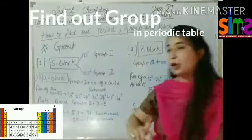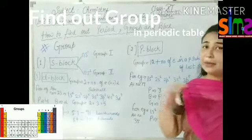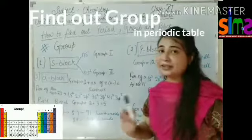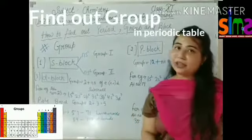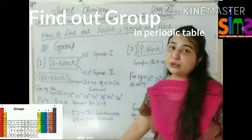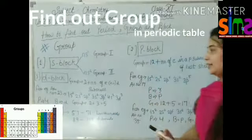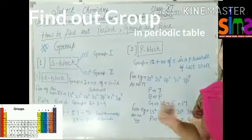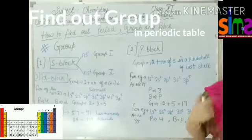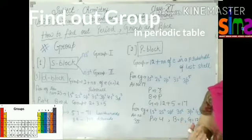Last है F-block — F-block को याद रखना है: अगर किसी भी atomic number 57–71 तक दिया जाए तो वो Lanthanides होते हैं, और 89–103 तक दिया जाए तो वो Actinides होते हैं। आई होगी समझ — कैसे हम group, period और block find out करते हैं। Thank you class!